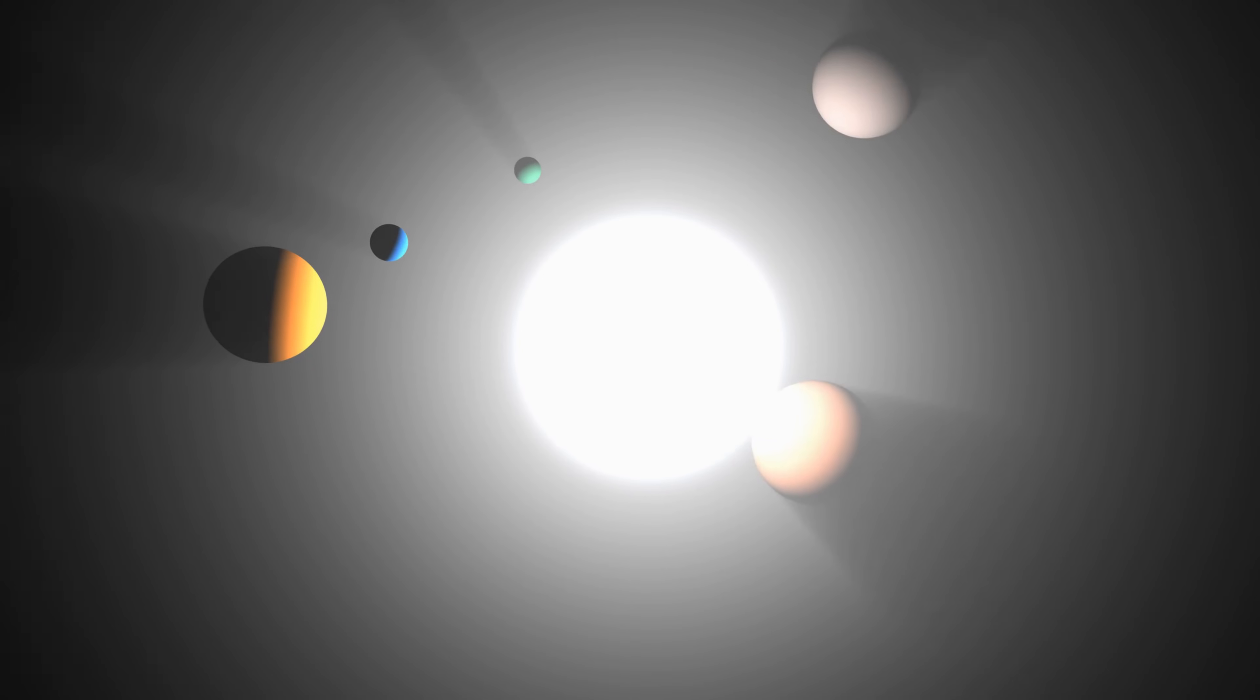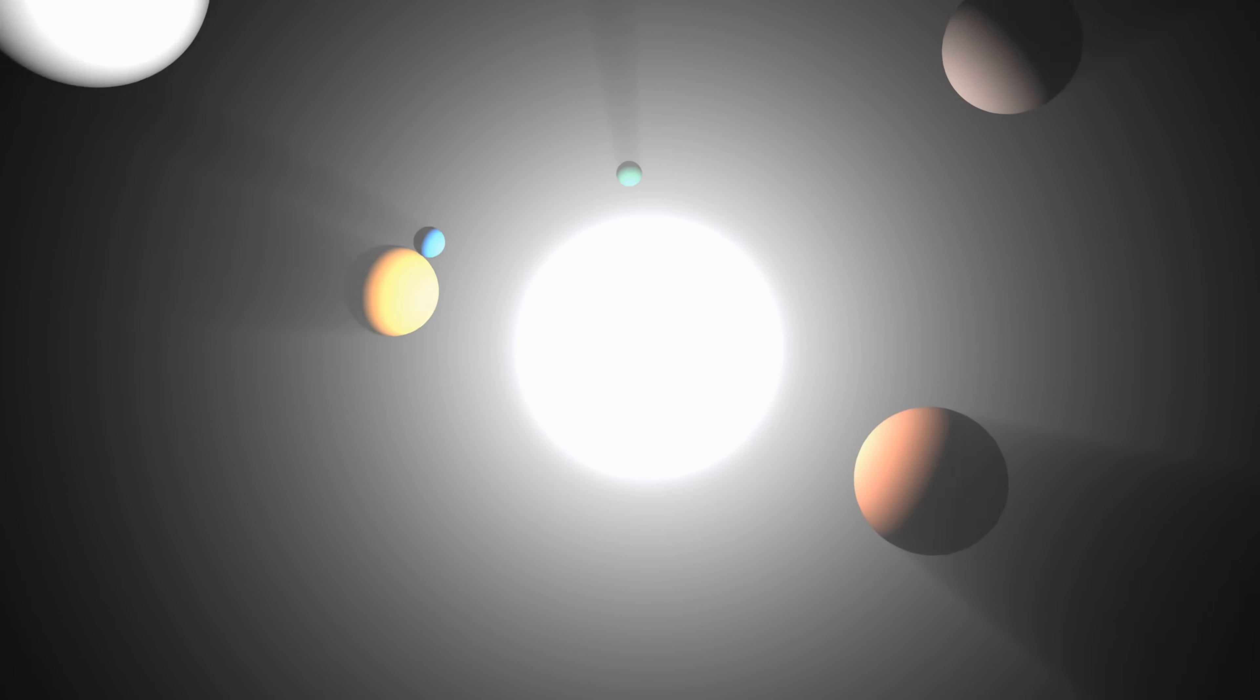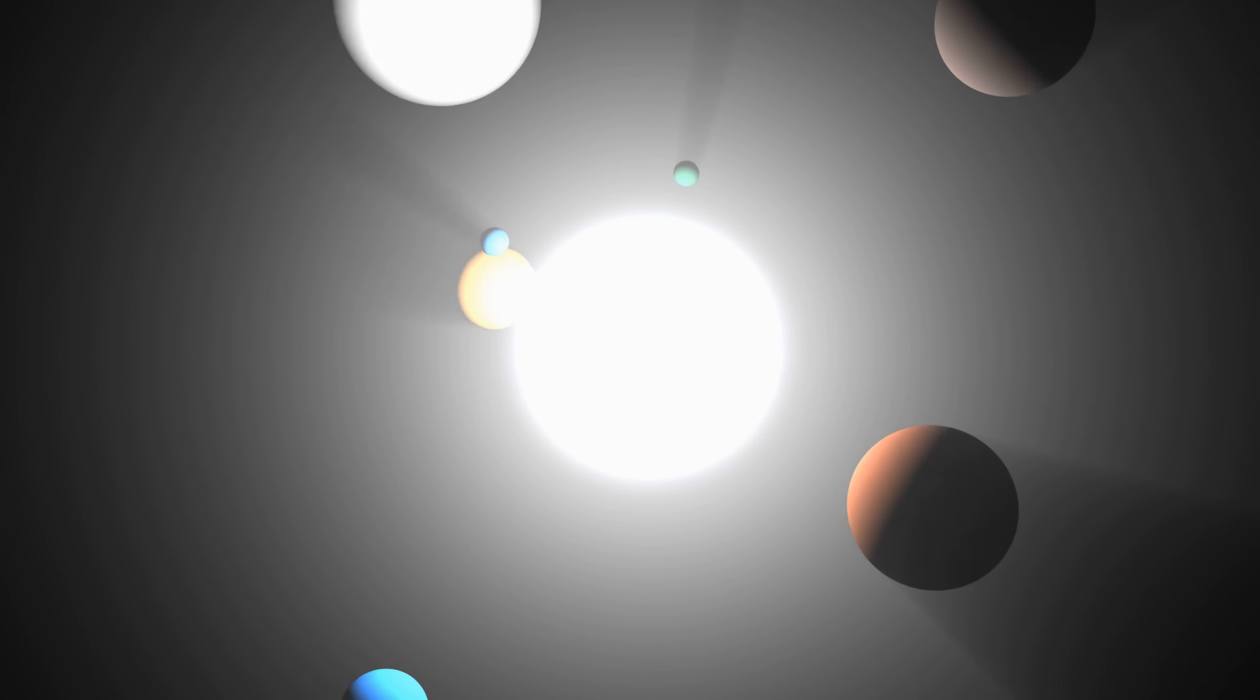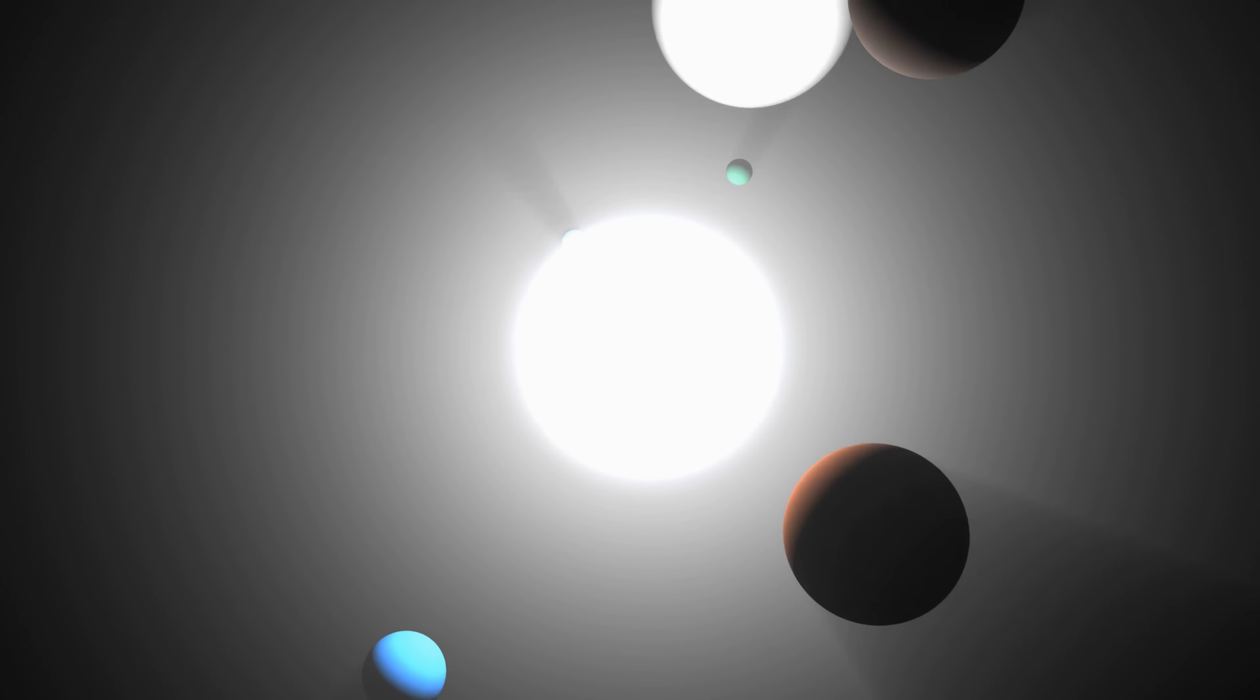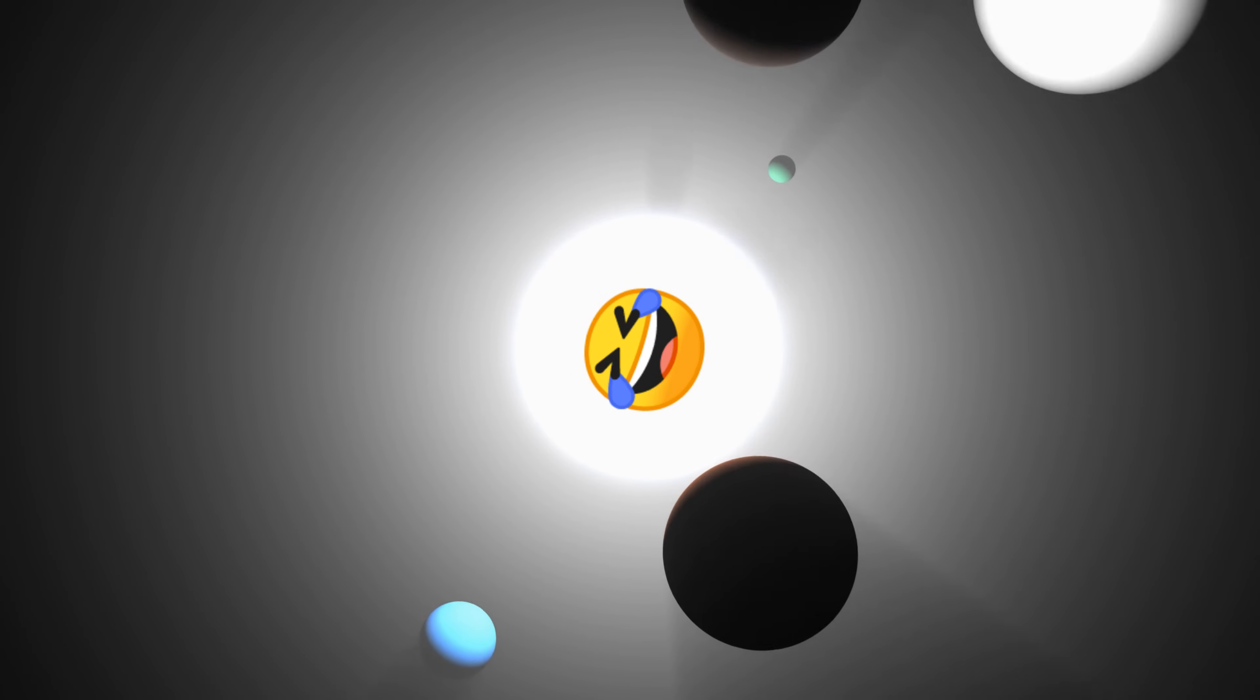A planetary system is a group of objects in space that have come together to form a neighborhood, a very big spacious neighborhood. Get it? Spacious? That's a little interplanetary humor there.